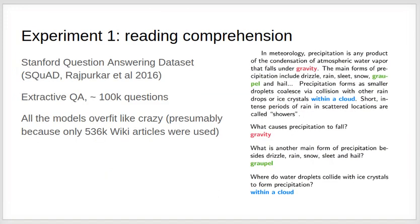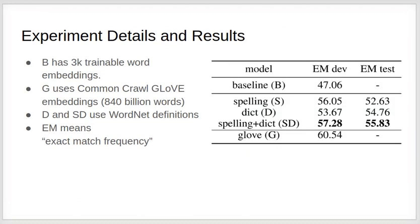We evaluated our approach on reading comprehension, which is a task in which a question about a passage should be answered. And we found that using dictionary definitions allows us to narrow the gap between the baseline approach and using embeddings pre-trained on 840 billion words.